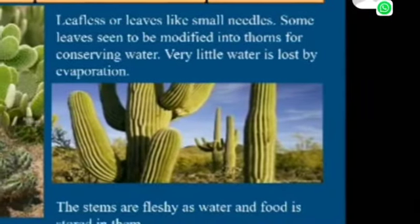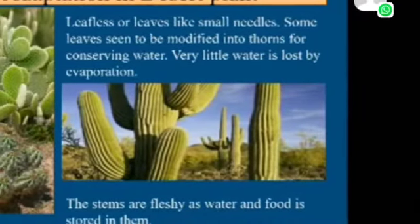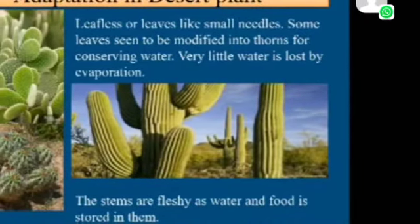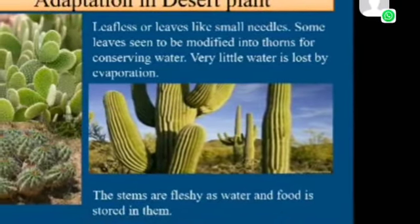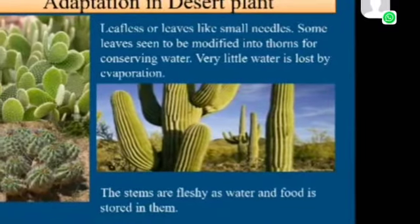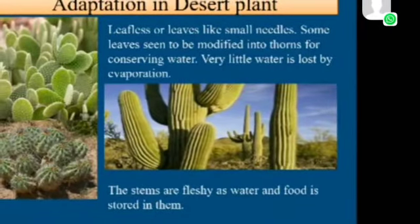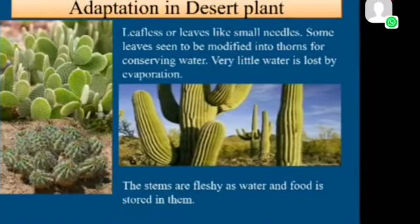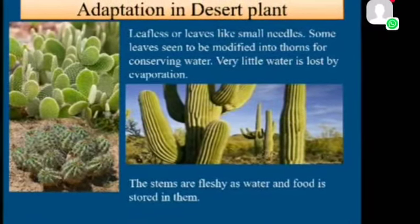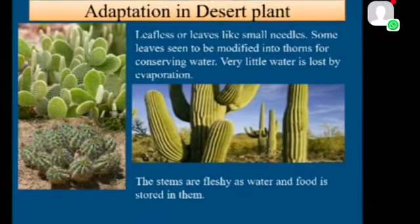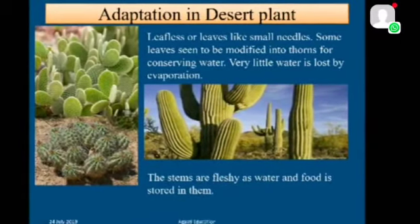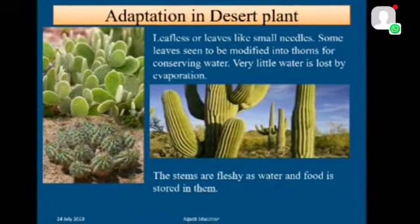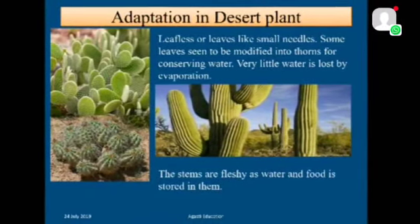Adaptation in desert plants. Leaflets or leaves are like small needles. Some leaves seem to be modified into thorns for conserving water. Very little water is lost by evaporation.